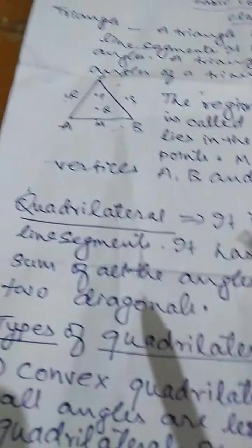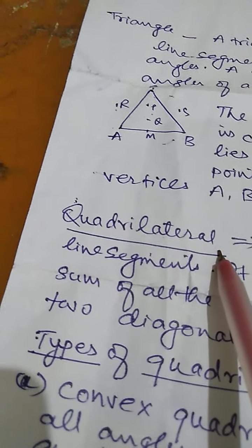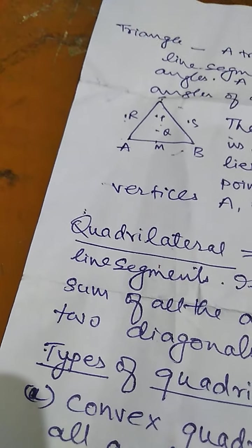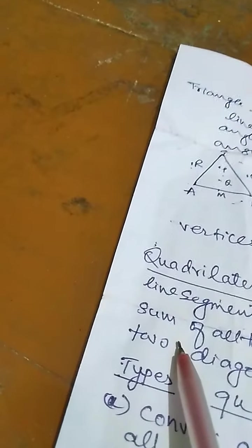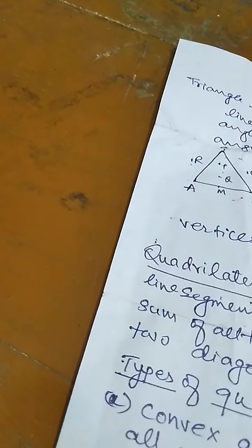Next, the polygon bonded by 4 line segments is called quadrilateral. It has 4 sides, 4 vertices and 4 angles. Sum of all the angles of quadrilateral is 360 degree. It has 2 diagonals, types of quadrilateral.